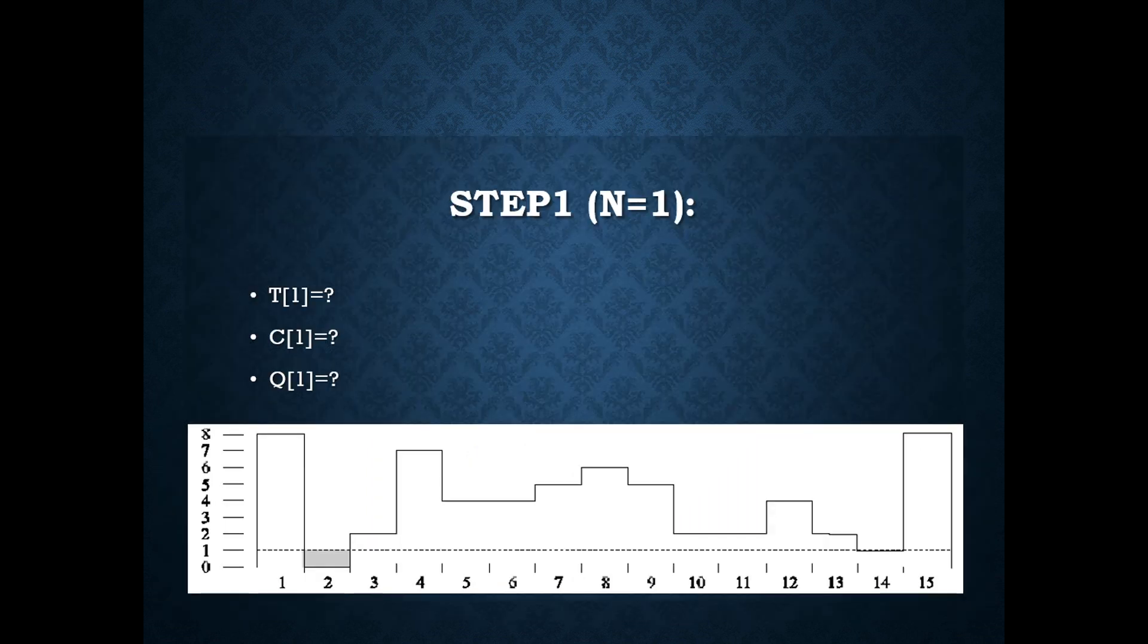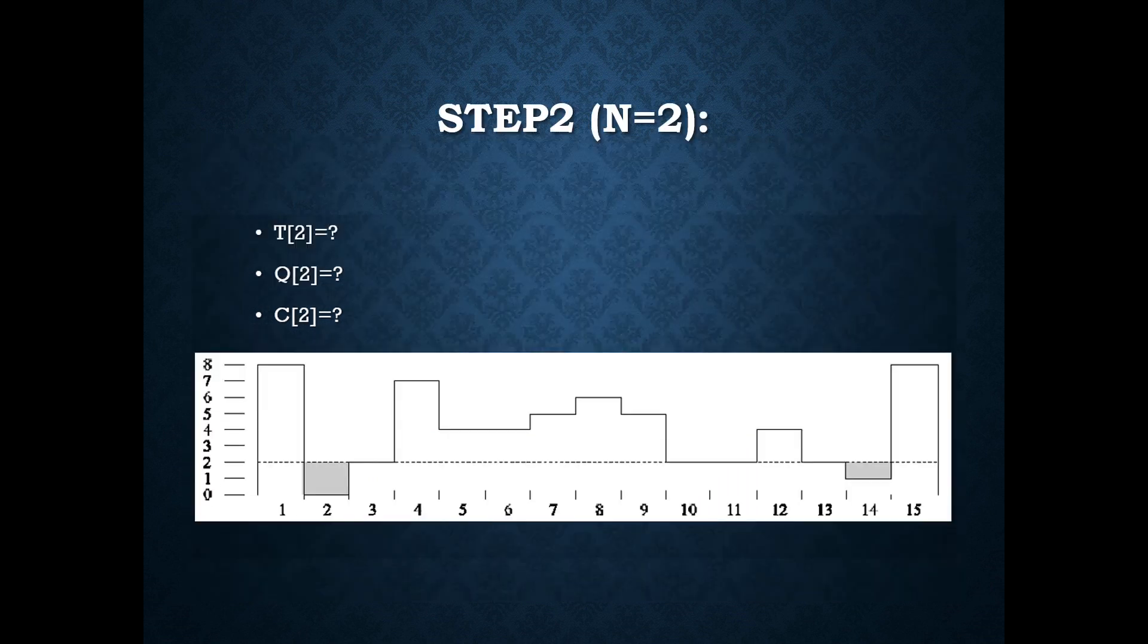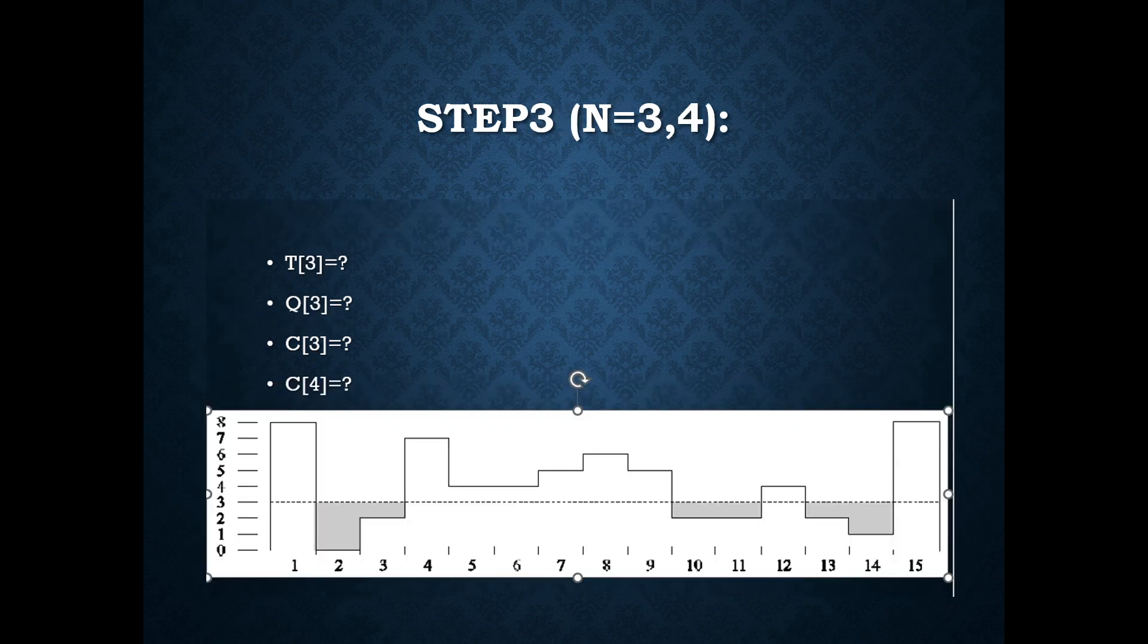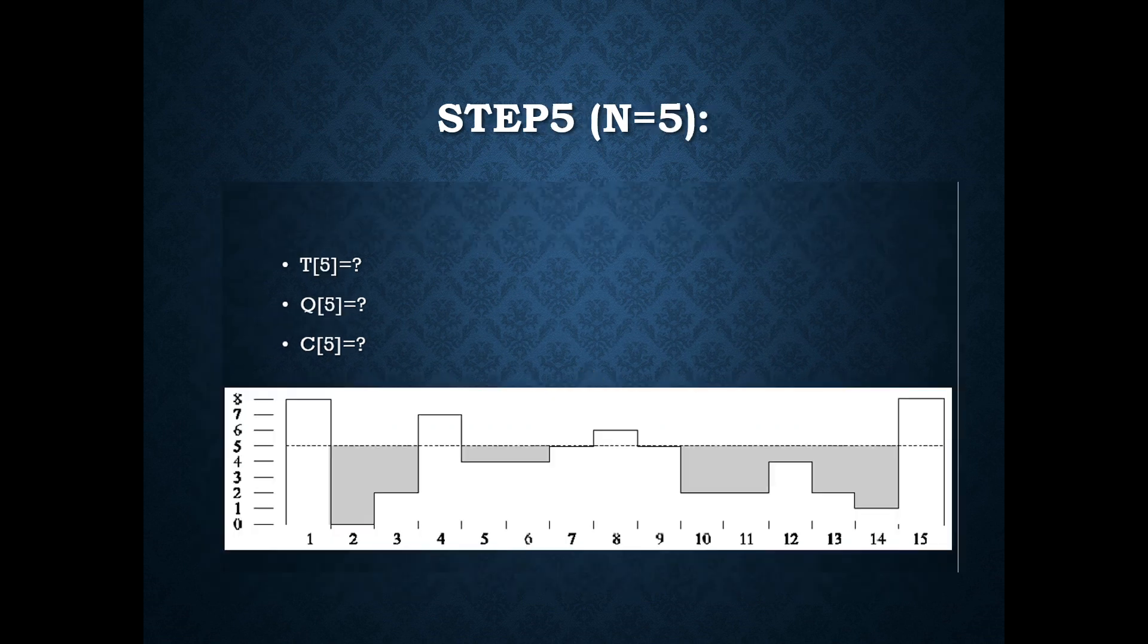Step 1, where we will be indicating as n equal to 1. In step 2, where we will be taking as n equal to 2. In step 3, where n is equal to 3 and 4, the flooding will be more.